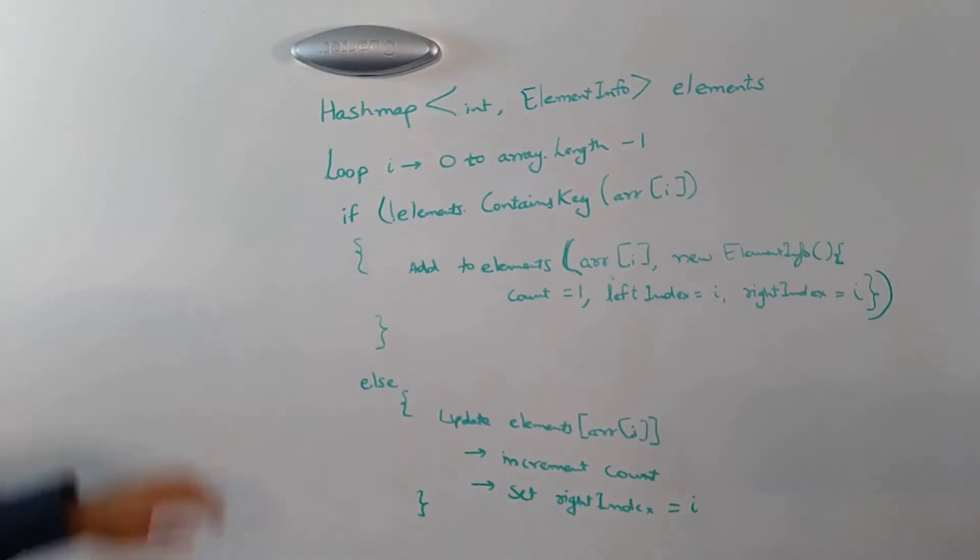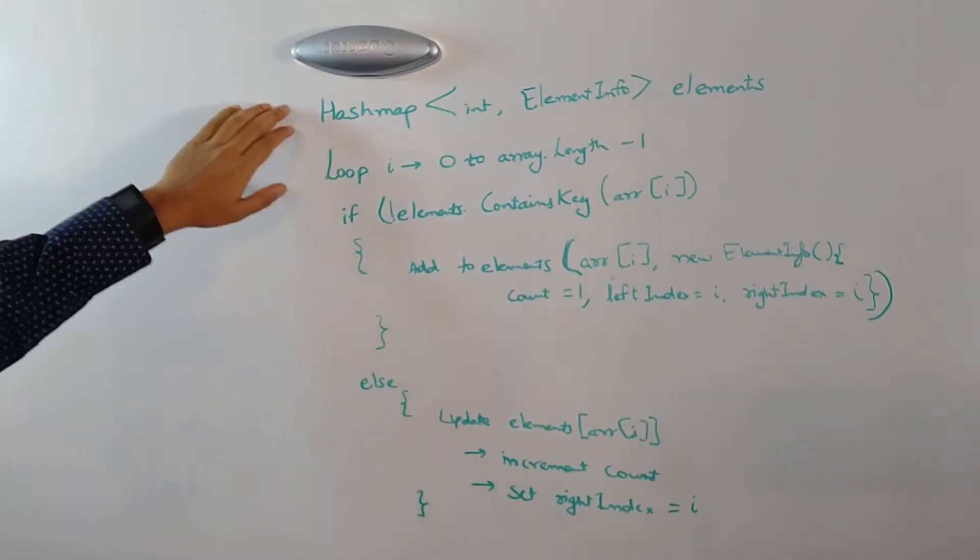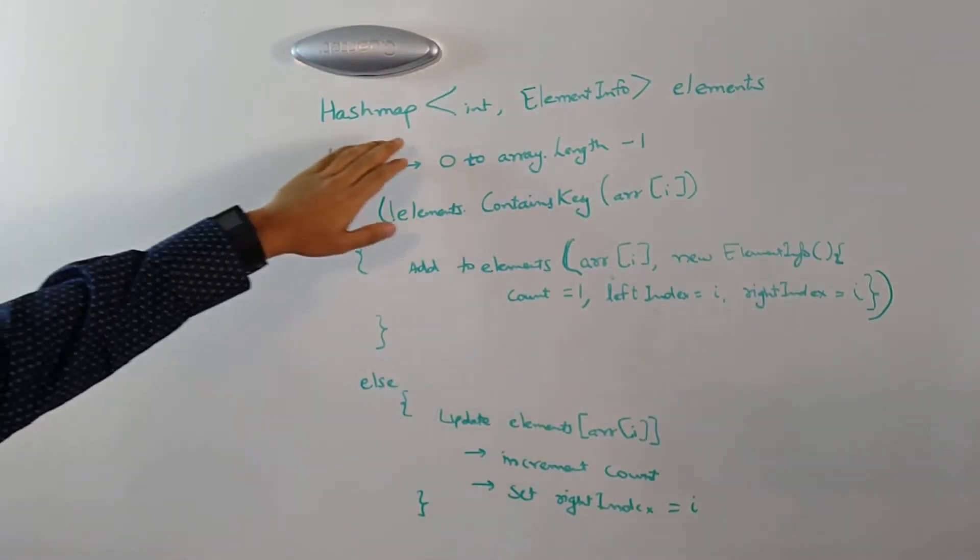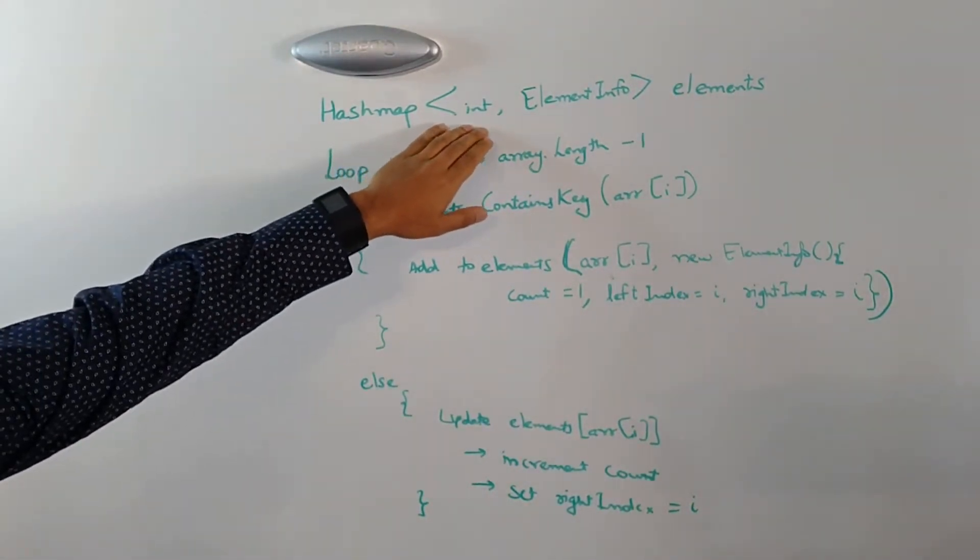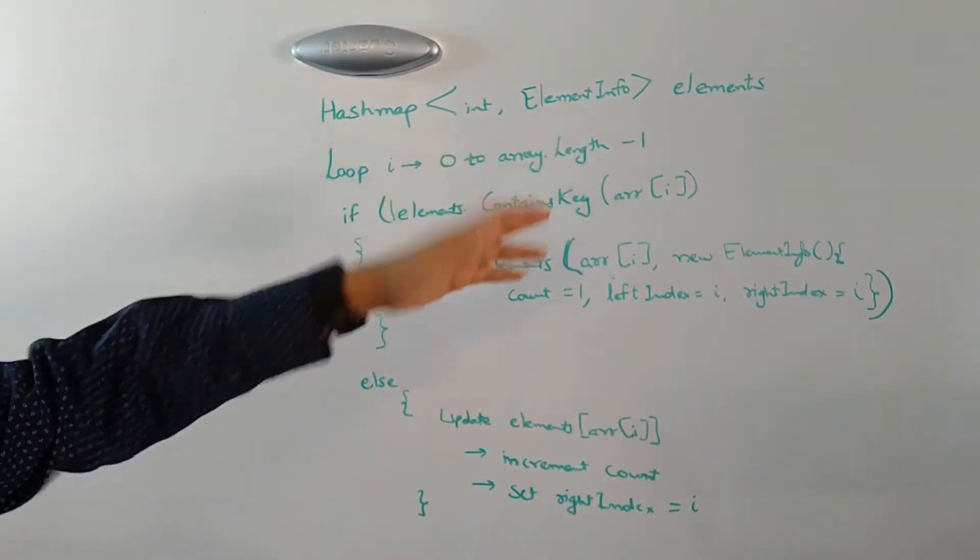As you can see here is the pseudocode for building the hash map. So we are initially declaring our hash map to have integer as the key and element info as the value and we gonna name it as elements.